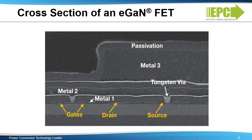This is an actual cross section of an eGAN FET from EPC. The tiny gates, drain, and source electrodes highlighted in yellow can barely be seen. There are three metal layers to conduct the current to the surface connections with very low resistance.